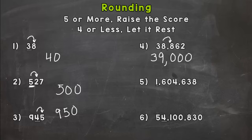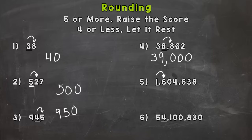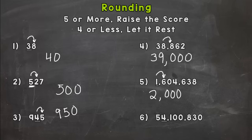Let's take a look at number five. We have a one underlined and that one is in the millions place. We're going to look next door to see if this number rounds up to two million or rounds to one million. There's a five or more there, so we raise the score — the one rounds up to two. Everything to the right of the millions place changes to a zero. With these larger numbers, make sure you have the right number of digits and everything is in the correct place.